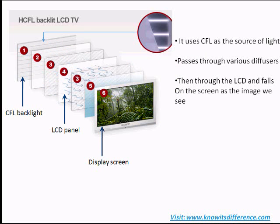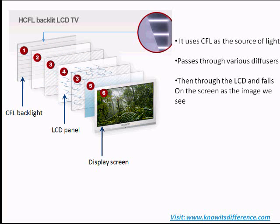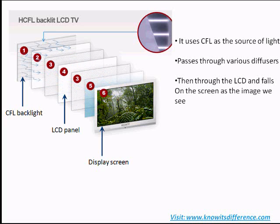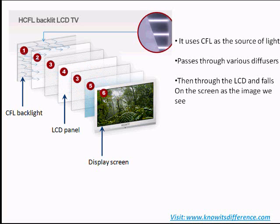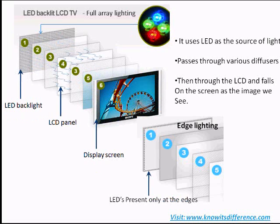The difference lies in the type of light source used. A normal LCD TV uses a CFL, or cathode fluorescent lamp, as a light source, and the light passes through various diffusers, a polarizer, an LCD panel, and finally falls on the screen as an image. Whereas in an LED TV, instead of CFL, a light emitting diode or LED is used as a light source.